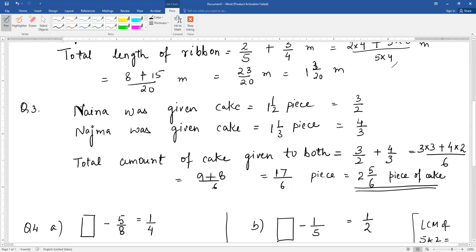Then question number 4, we will discuss parts a and b. The rest you can do on your own. You are given a box, it is empty, fill in the blank. Box minus 5 by 8 should give you 1 by 4. The denominator is 8 here and denominator is 4 here. First we need to make both denominators the same so that comparison is easy.